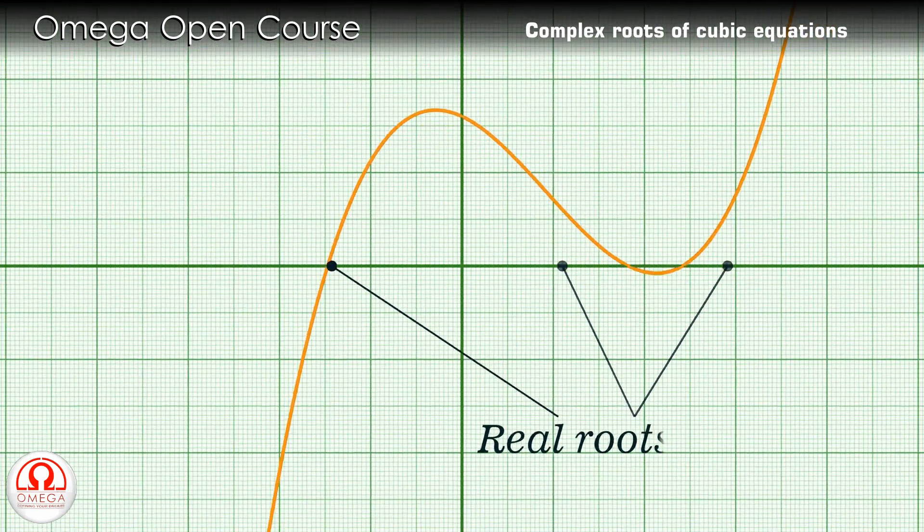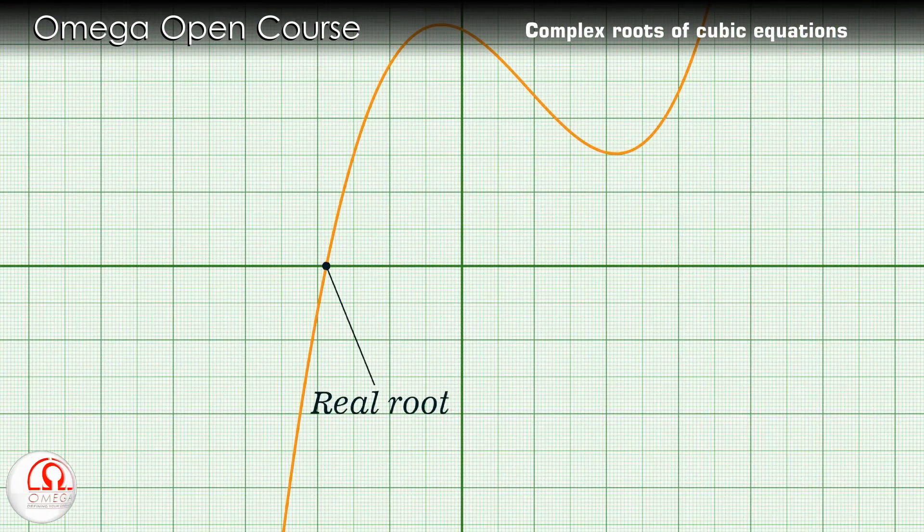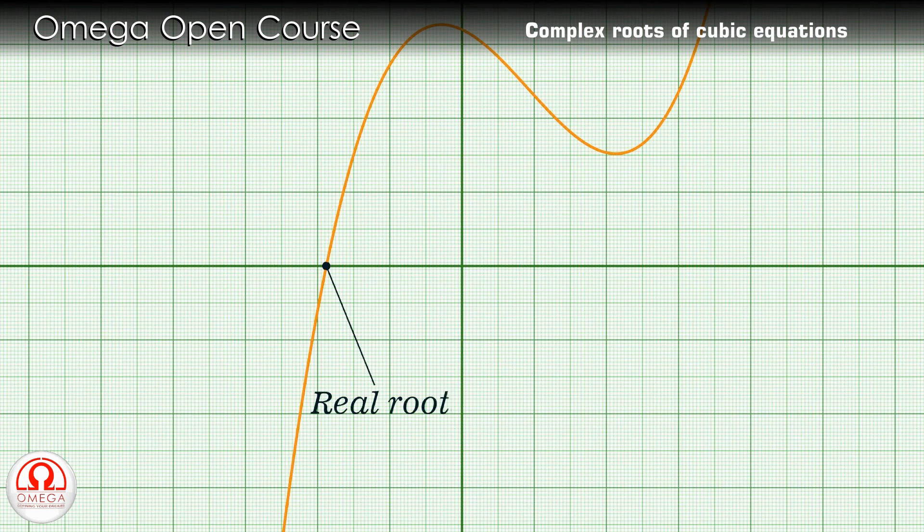If the graph intersects the x-axis at only one point, then only one of its roots is real. The rest of the roots are complex conjugates.